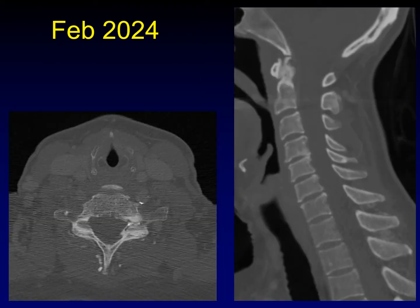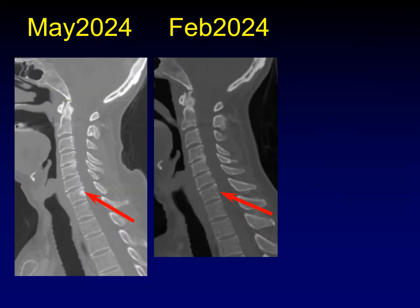We looked back to an examination from just three months earlier, and in that same vertebral body there is no evidence of sclerosis along the posterior margin. So what could be responsible for this sudden development of a sclerotic mass along the posterior vertebral body? What do you think is going on?